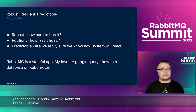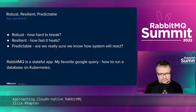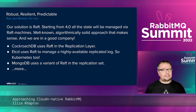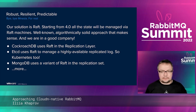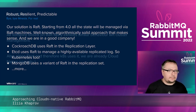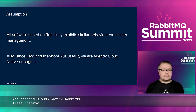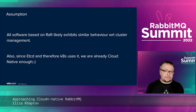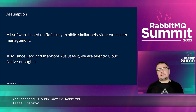My favorite Google query of all time is how to run a database on Kubernetes — lots of interesting stories about clustering, storage performance, network performance. Our solution here is Raft for cluster management. It's a well-known algorithm used by lots of other products, so we're in good company. Knowledge regarding cluster management can be reused from other Raft-based products. Since etcd and therefore Kubernetes use it, we are cloud-native enough.